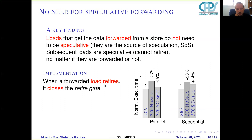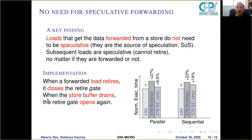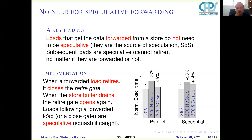We implement this as follows. When a forwarded load retires, it closes what we call the retired gate, so no other load can retire after that. When the store buffer drains, the retired gate opens again. Loads that follow a forwarded load, or are resolved while the gate is closed, will be speculative and will squash if they are caught. With this implementation, we get only 2% extra execution time for both parallel and sequential applications, though we're still not at the ideal.